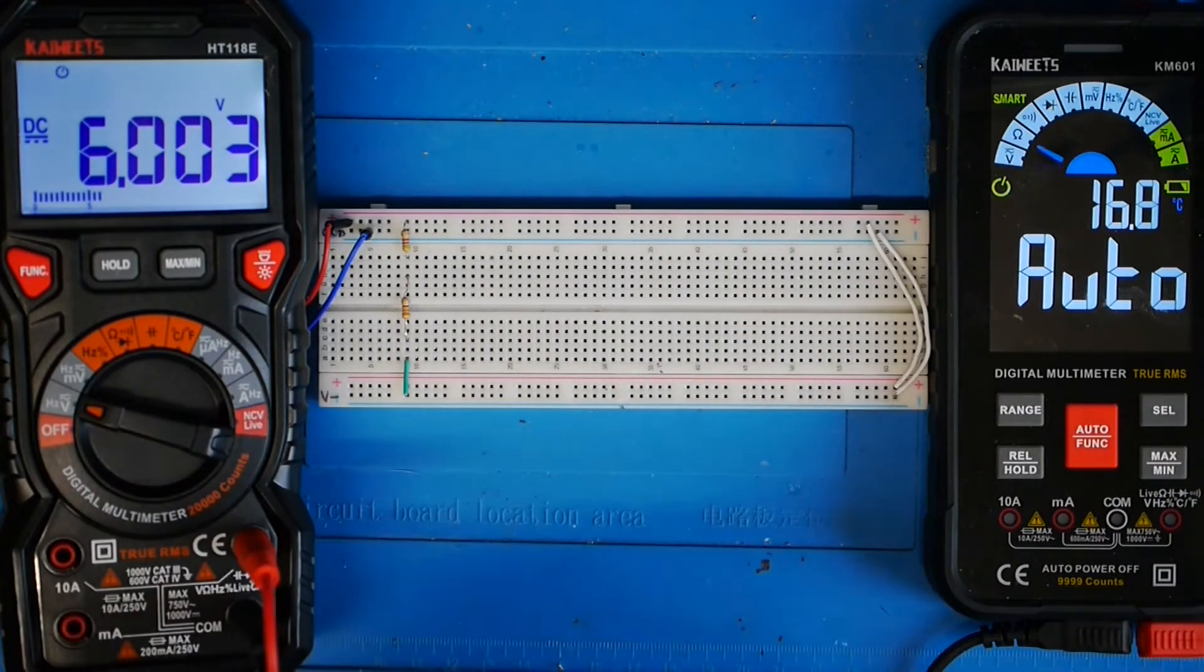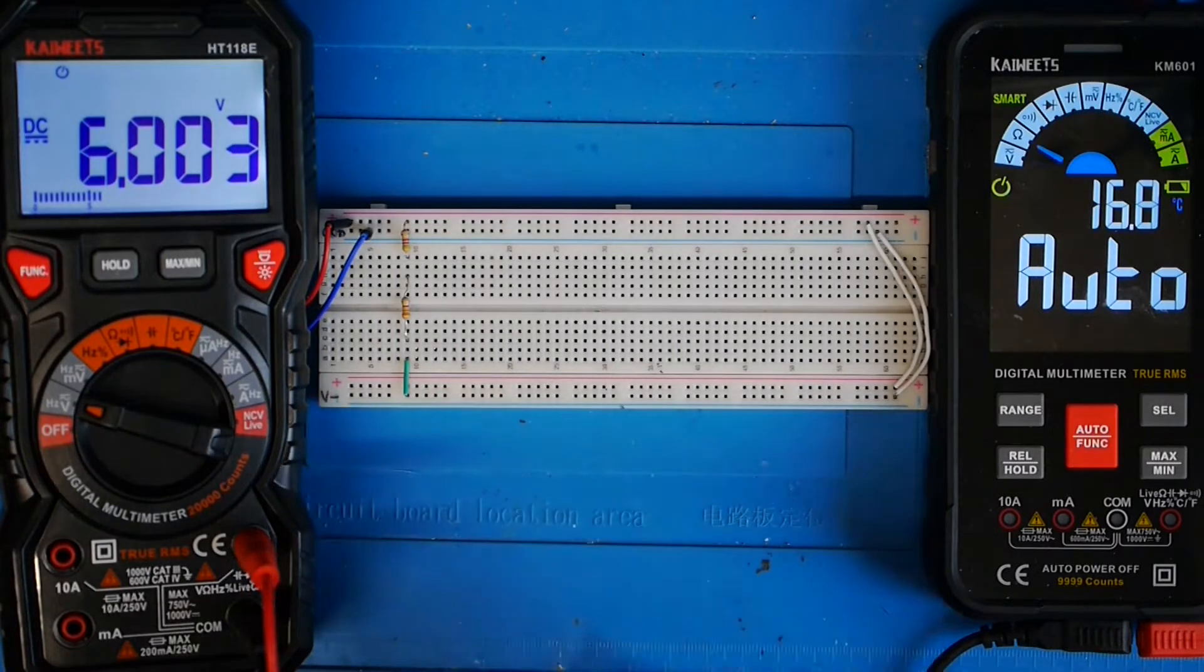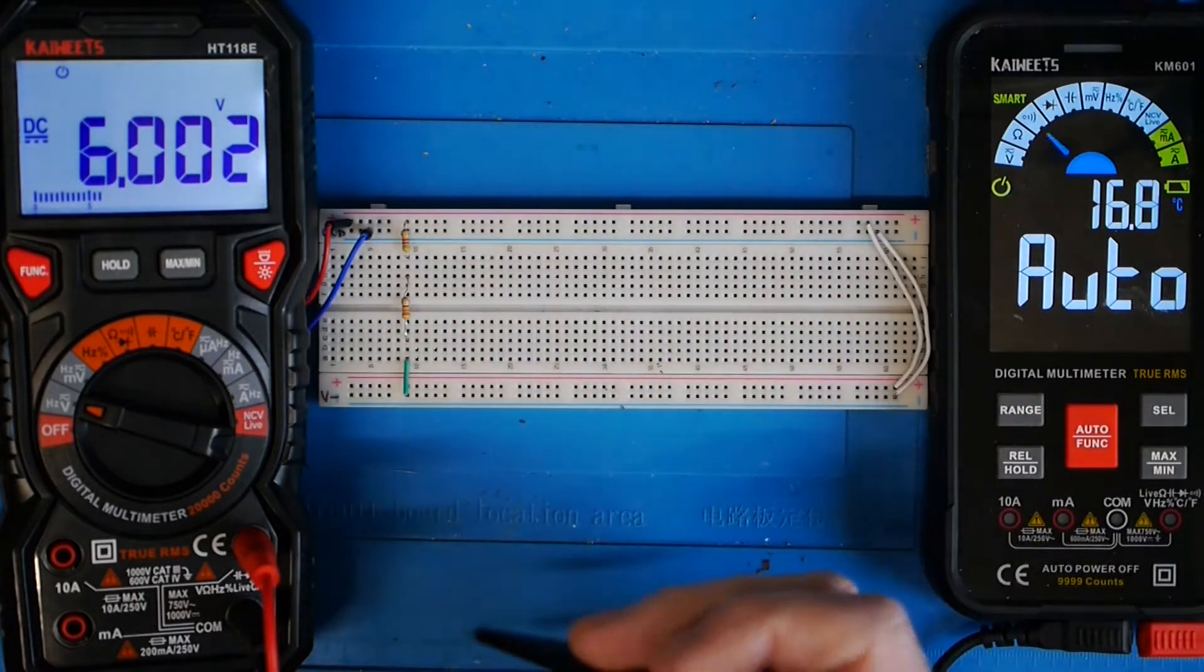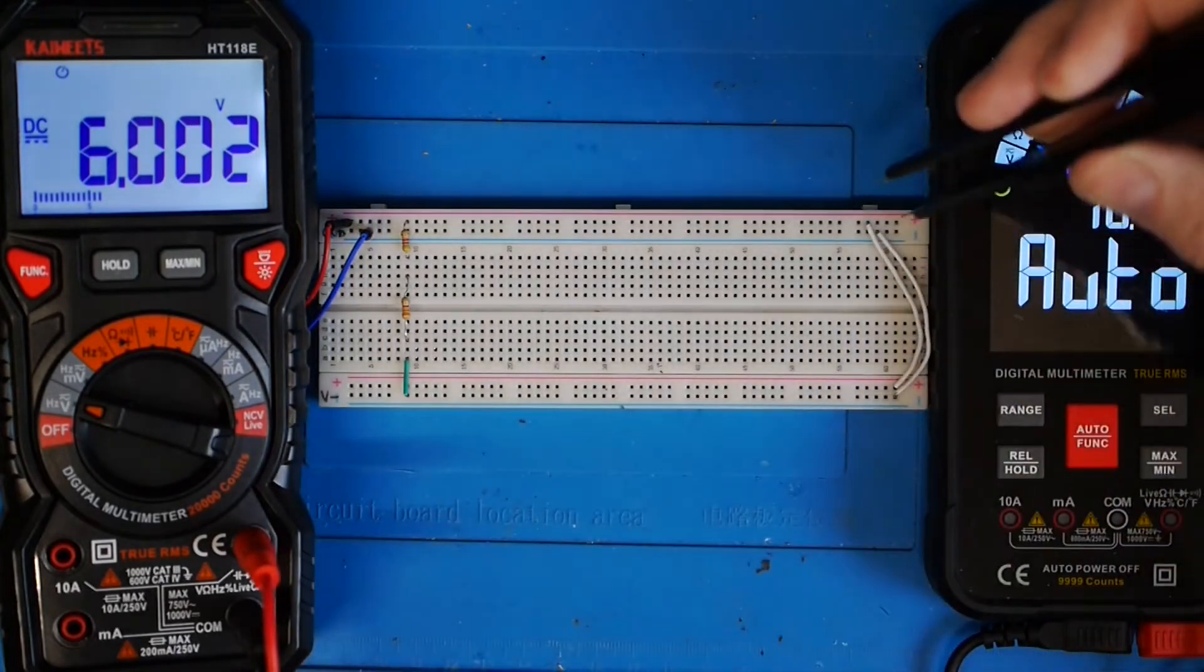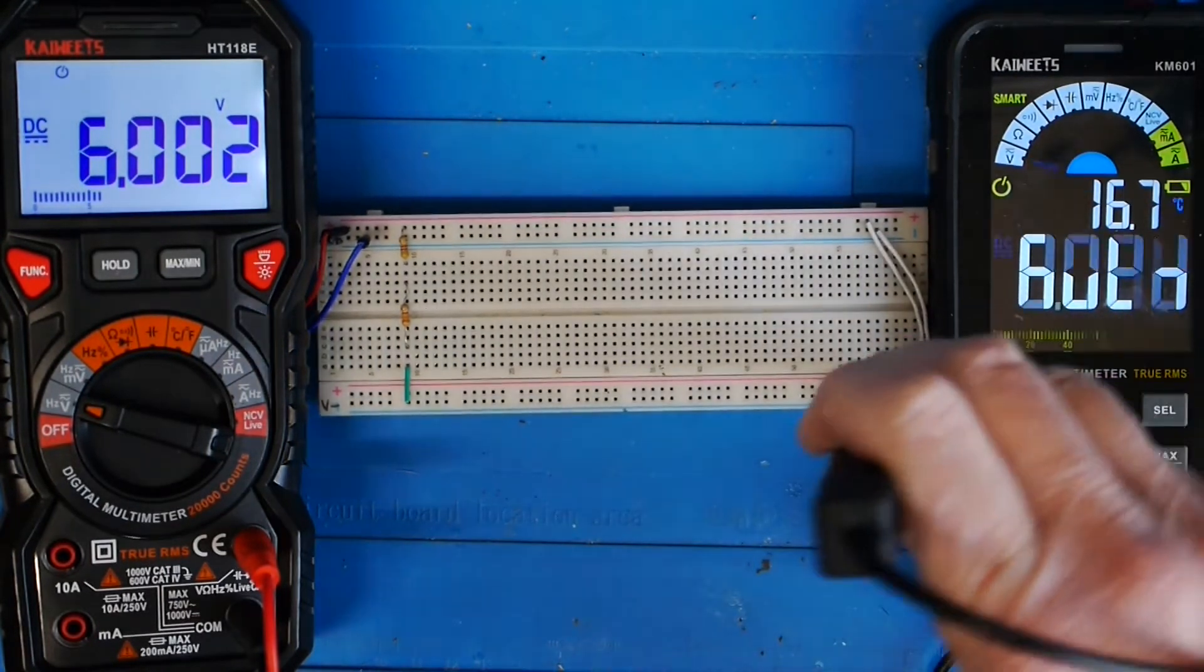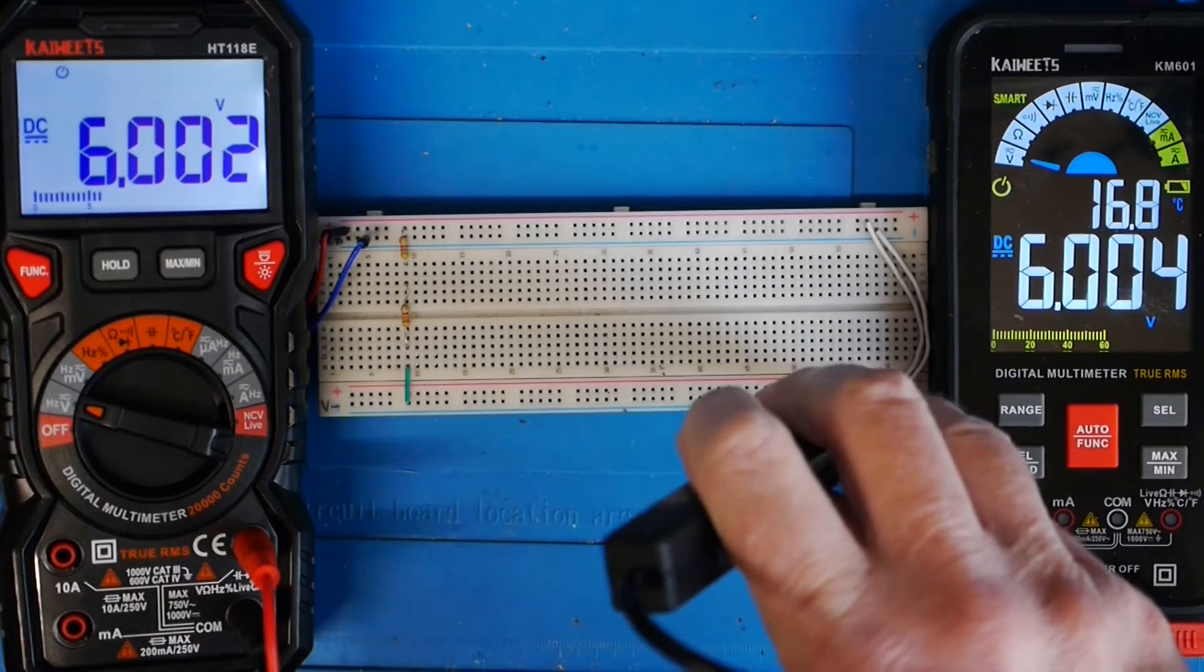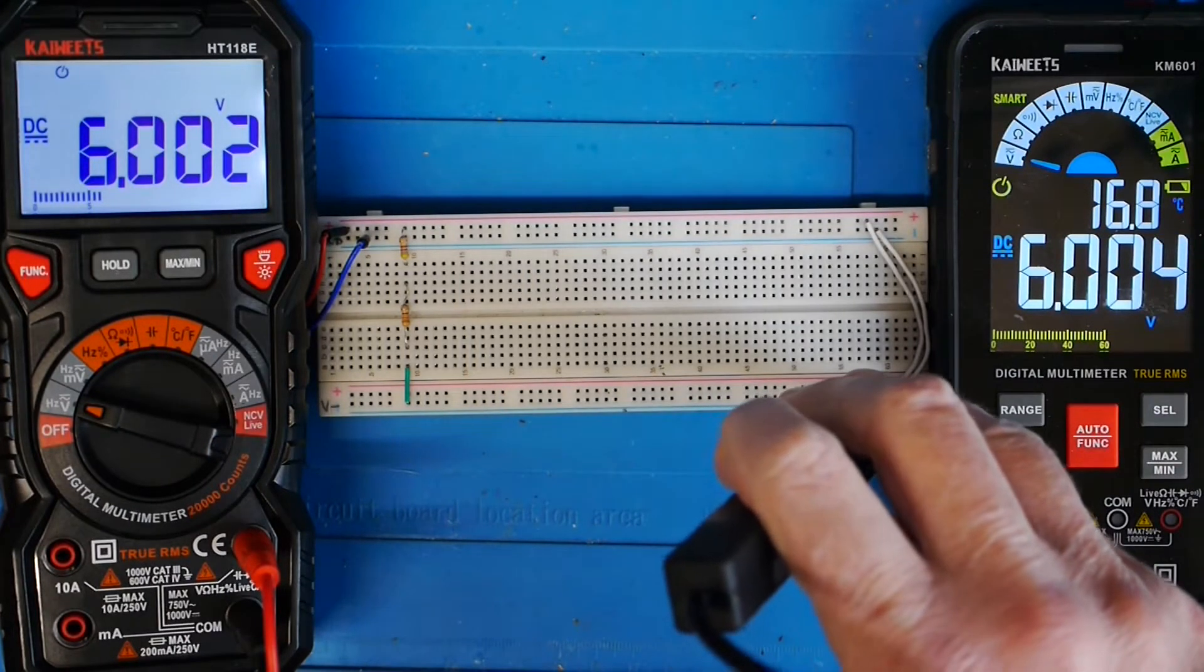I've got a second meter here which is currently set to auto mode. First thing I'm going to do is just put the probes on across here and check that it agrees with the six volts.